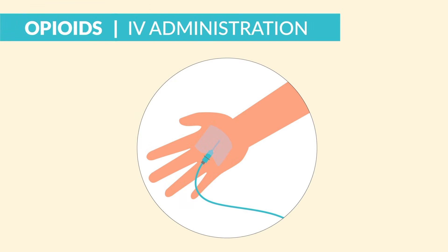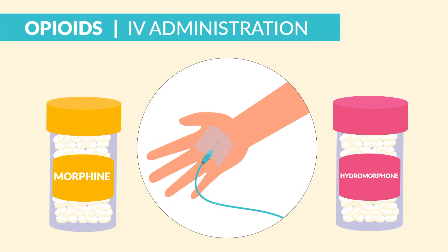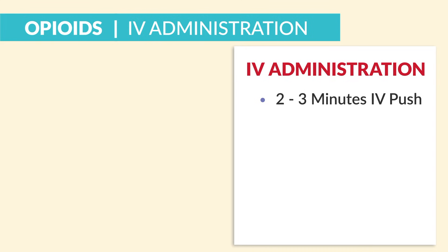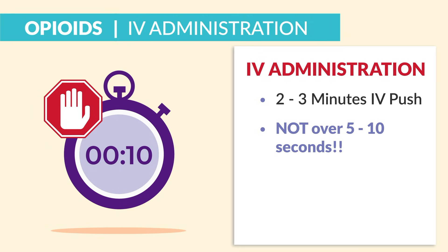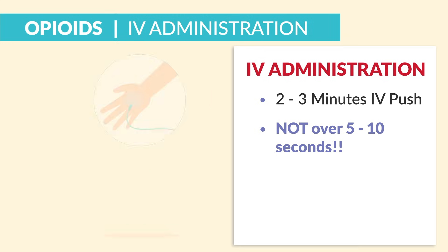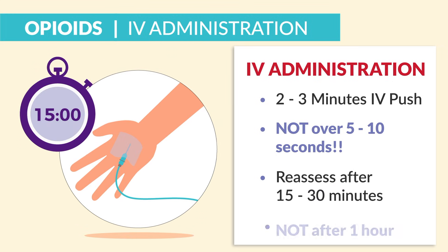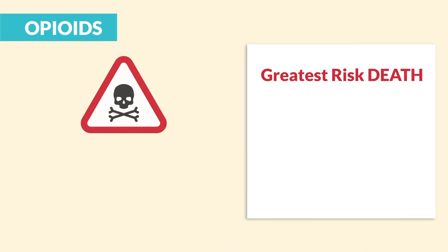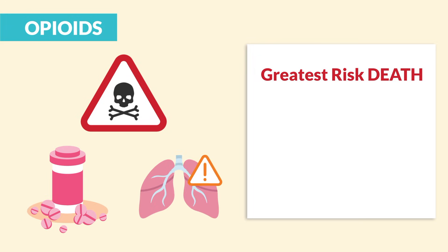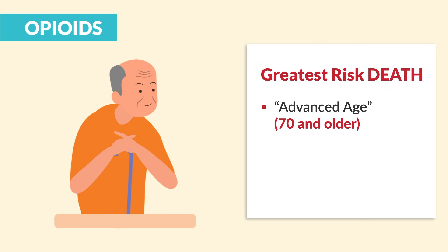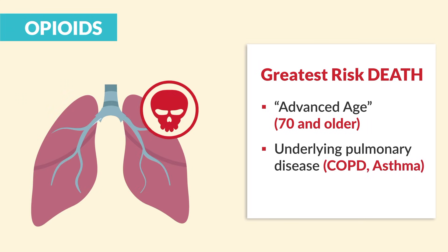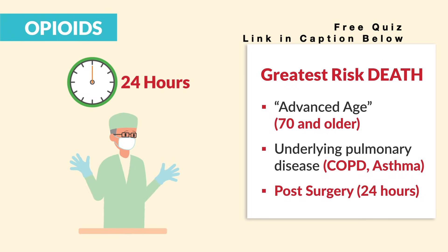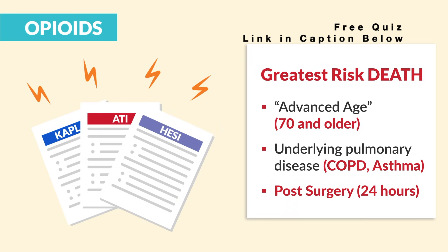For IV administration of opioids like morphine and hydromorphone, administer over two to three minutes IV push — not over five to ten seconds. A fast push usually means a fast death. Reassess after 15 to 30 minutes, not after an hour — that's usually for PO opioids. The greatest risk for death from overdose and respiratory depression is in patients with advanced age (70 years or older), underlying pulmonary disease like COPD or asthma, and even post-surgery within 24 hours.